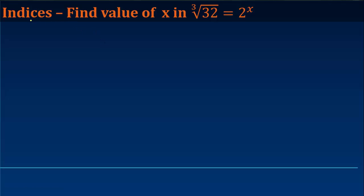In this video, we are going to use the law of indices to find the value of x in ∛32 = 2^x. Or in other words, you are given that the third root of 32 is equal to 2 to the power x.